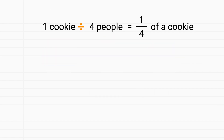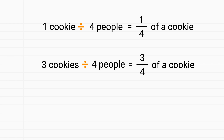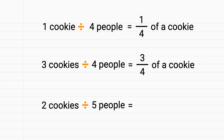Now we'll be able to find a pattern. When we had one cookie and we divided by four people, we had one over four of a cookie. When we had three cookies and we divided by four people, it was three over four of a cookie. So you can see this pattern — if we had two cookies and we divided by five people, each person would just get two-fifths of a cookie.